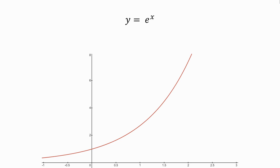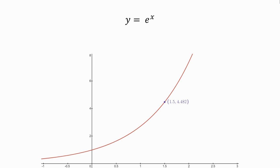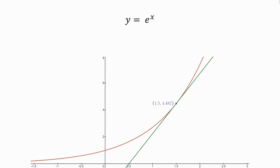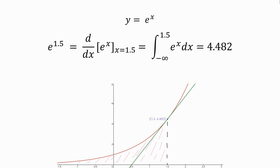In calculus, e has enormous significance as well. Let's take a look at the graph of y equals e to the power of x. Let's choose any value, like x equals 1.5 — it doesn't matter what point we choose, because it'll apply to anything. If we find the value of the function at 1.5, find the instantaneous rate of change at 1.5 — the slope of the tangent line — and find the area of the curve up until that point as shown in pink, we find something really interesting: they are all equal to the same value.